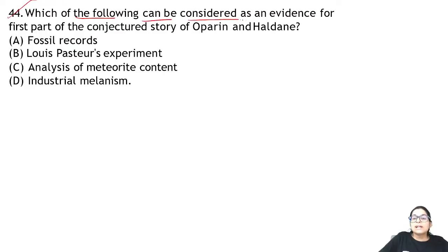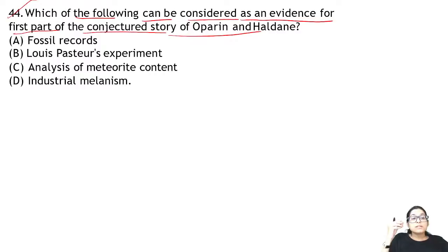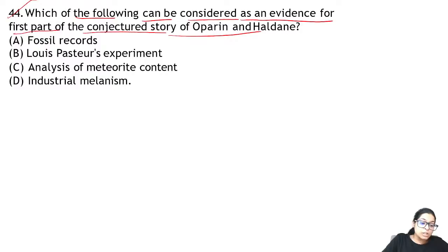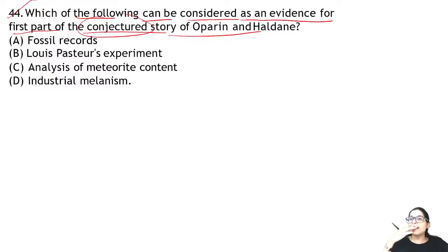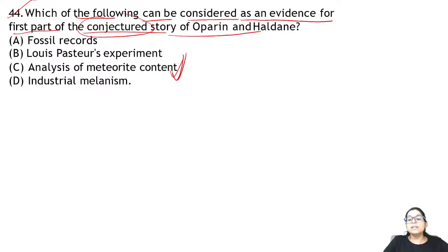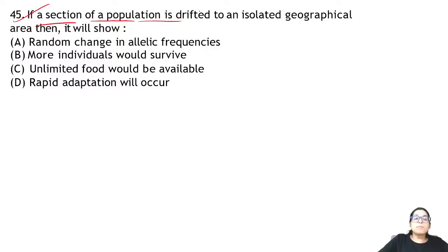Question 44: what can be considered as evidence for the first part of the conjectured story of Oparin and Haldane? The chemicals formed in their experiment were also found on meteors. This connects the two findings and suggests that the same chemical processes that occurred in the primordial Earth also happened elsewhere in space.